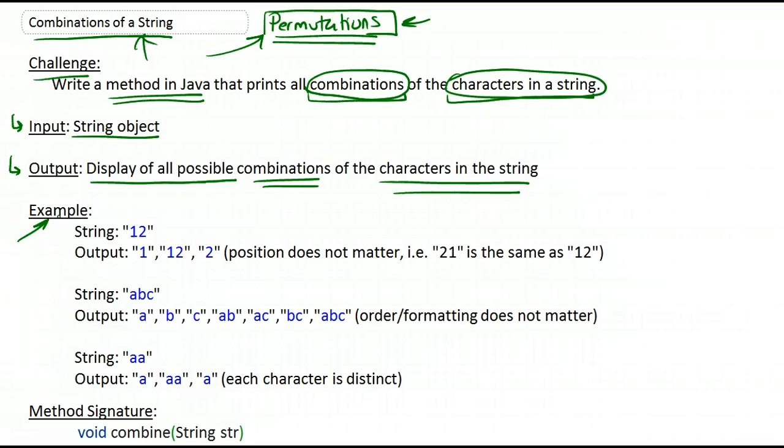And here are some examples. This is a very simple example just to illustrate what exactly we're doing. So suppose the string was one, two. What are the possible selections or groupings that we could make out of these two characters?